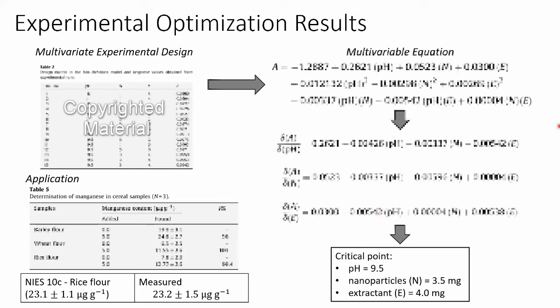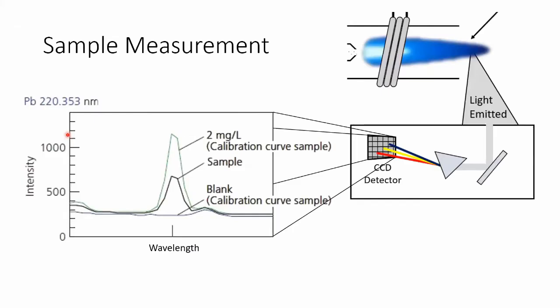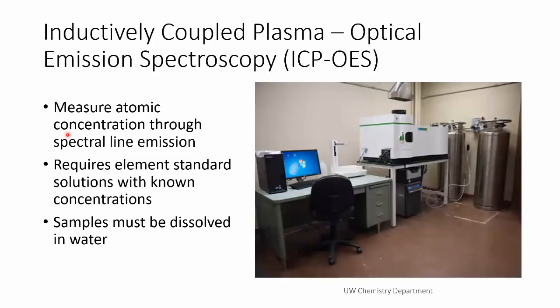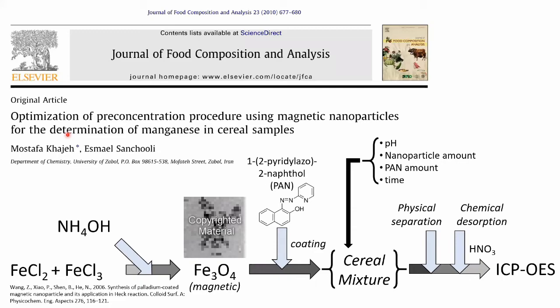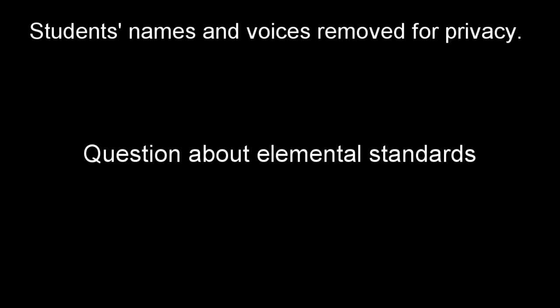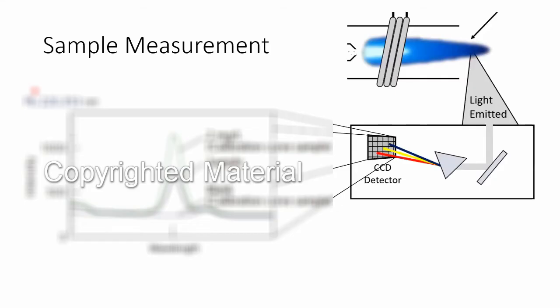That was five minutes and 30 seconds — a little bit over time. I was a little worried I didn't have enough content, so I was adding things I usually didn't include. Are there any questions about what I just covered? Do you guys understand what ICP-OES is and what kind of data you can get from it? This procedure measures the concentration of elements in a sample.